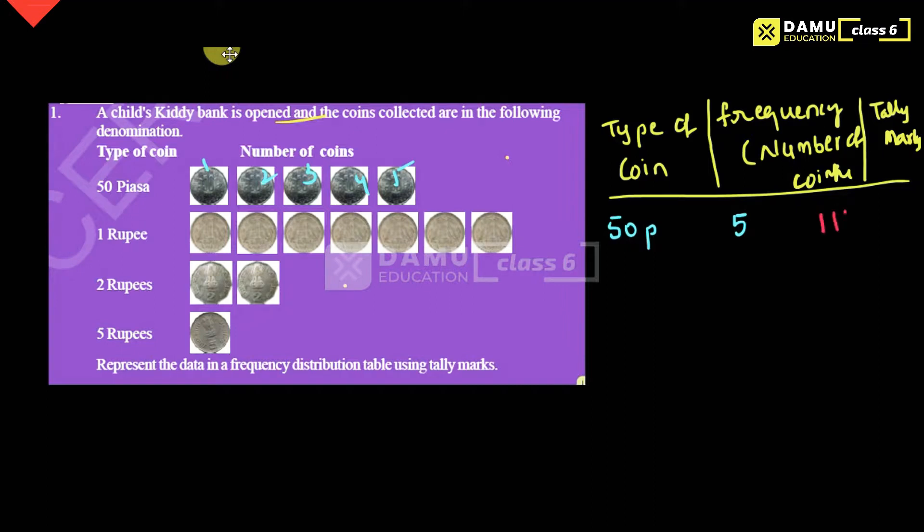1, 2, 3, 4, 5. You can write the tally marks like that — five marks total.